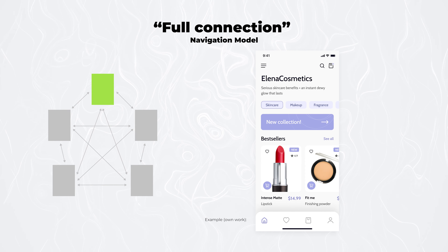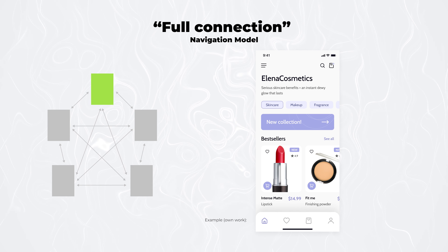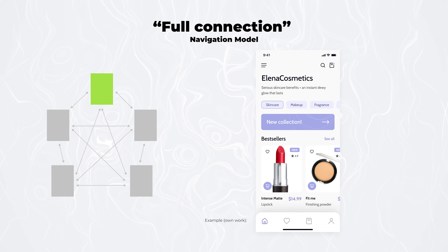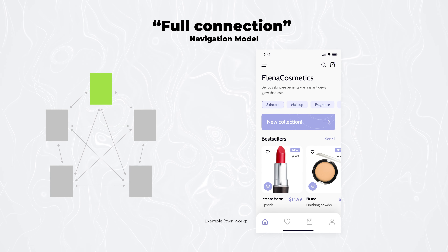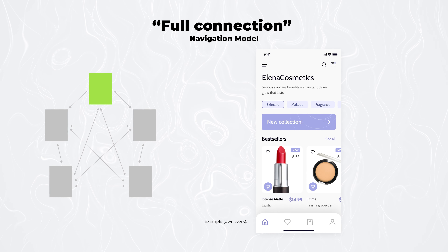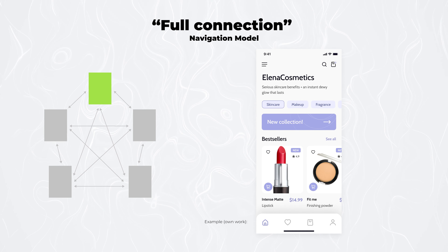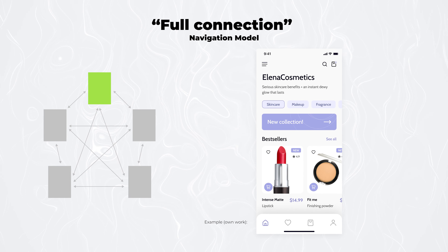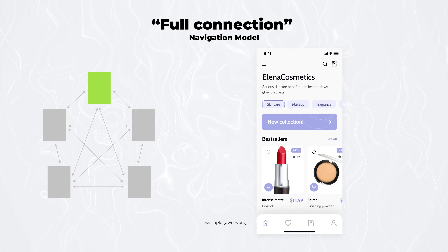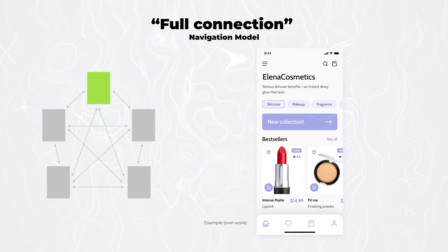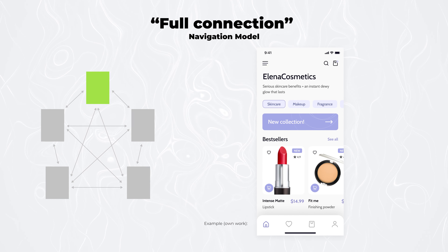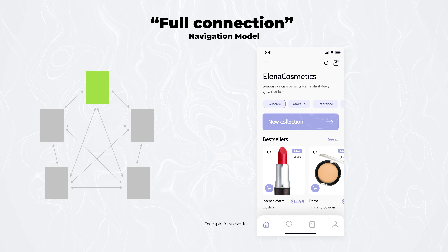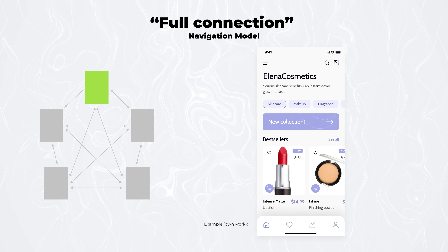The next model is one of the most popular navigation patterns. Here we also have a home screen, but the navigation is typically located at the bottom or top of the screen and stays there as the user goes through the website or app, always indicating where he or she is.